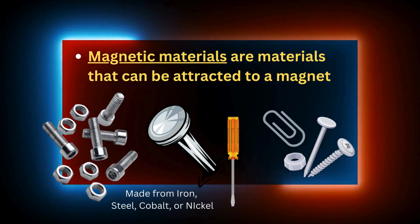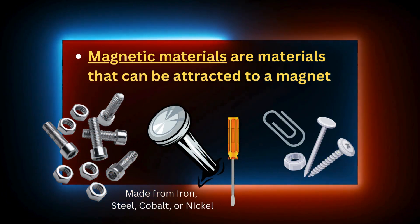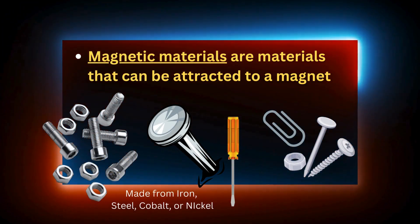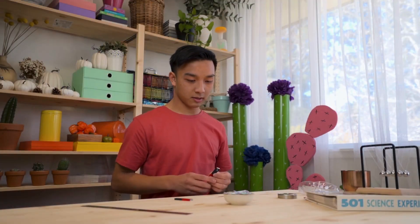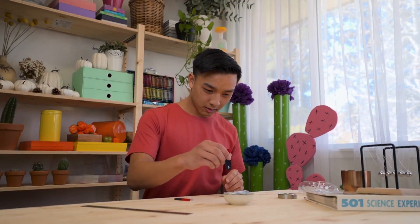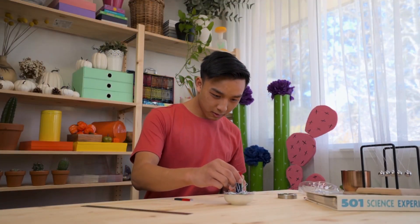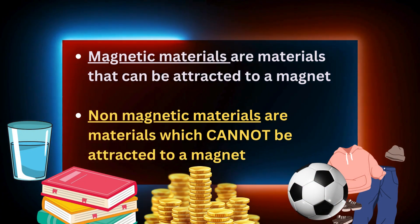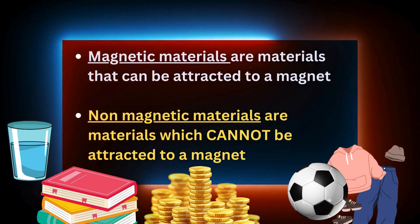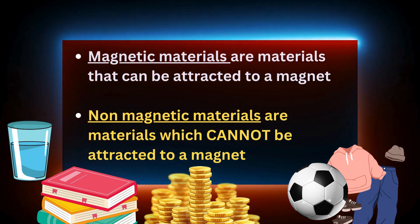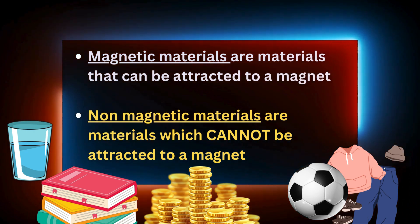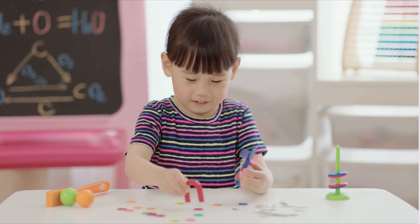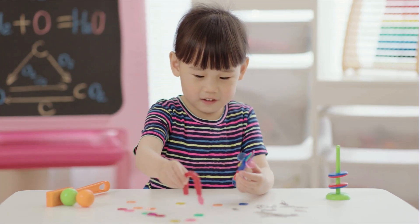Magnetic materials are materials that can be attracted to magnets. Non-magnetic materials are materials which cannot be attracted by magnets. Opposites attract and likes repel.